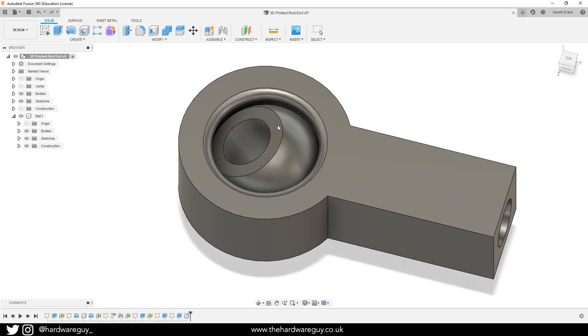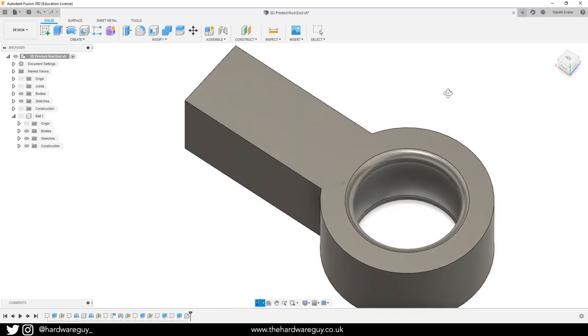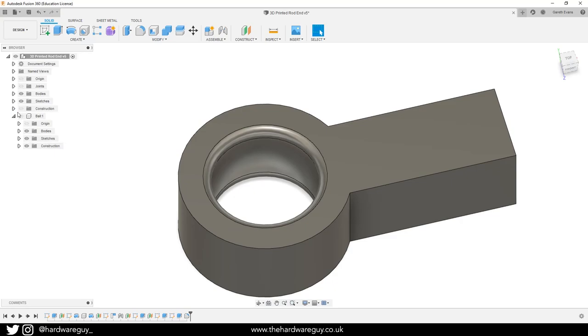All I did was simply create a spherical cutout in the center of the rod end where the ball will be. And the cutout has a slightly larger diameter than the ball to allow for smooth movement. But this difference in diameter was something that I had to experiment with.